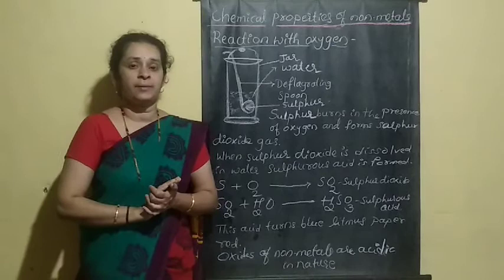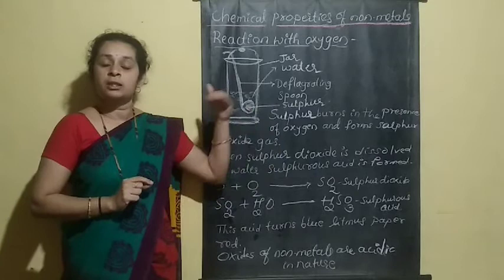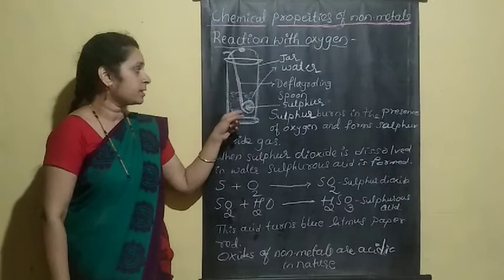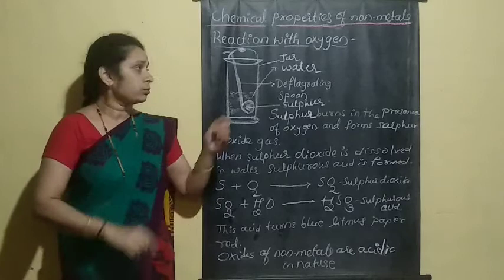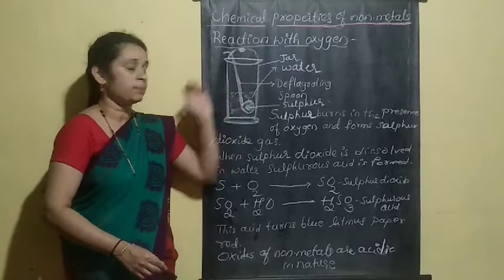You introduce the burning deflagrating spoon containing sulfur into a jar. The spoon produces sulfur dioxide gas. The jar should contain a small amount of water, and it must be closed properly so the white-colored gas is collected inside and does not escape.